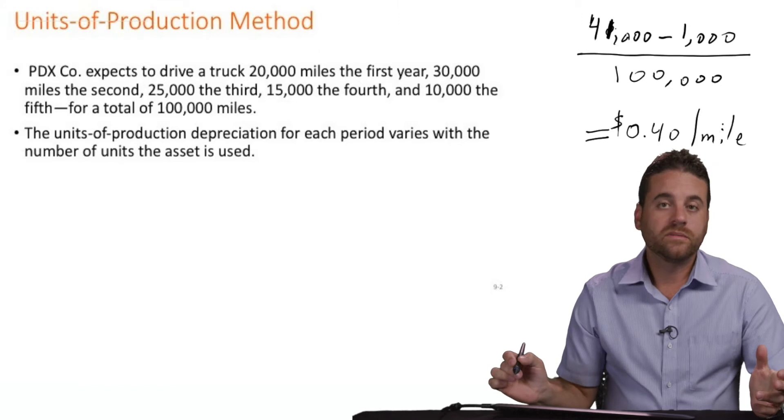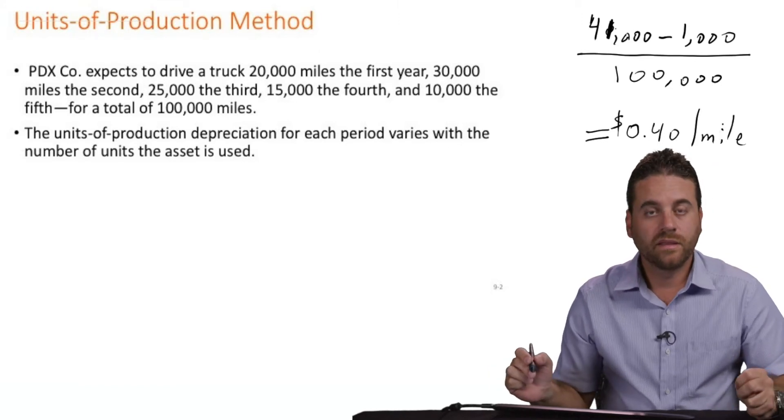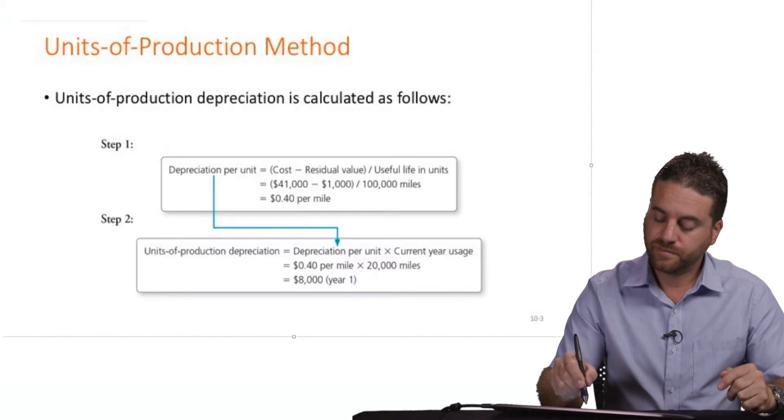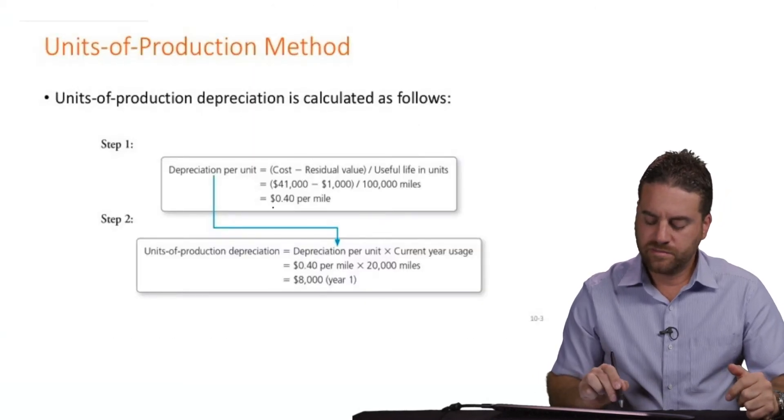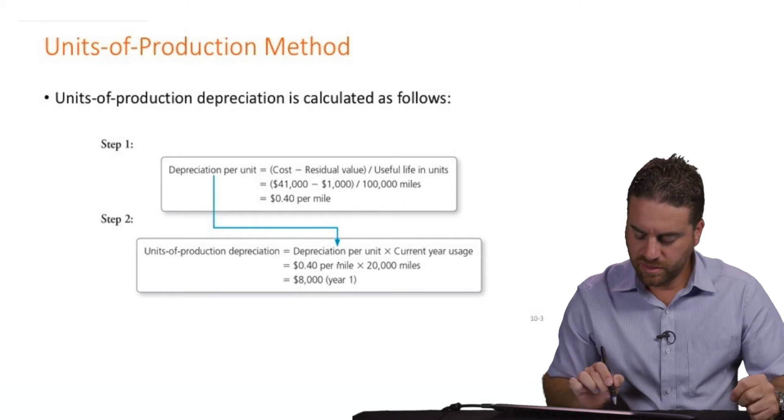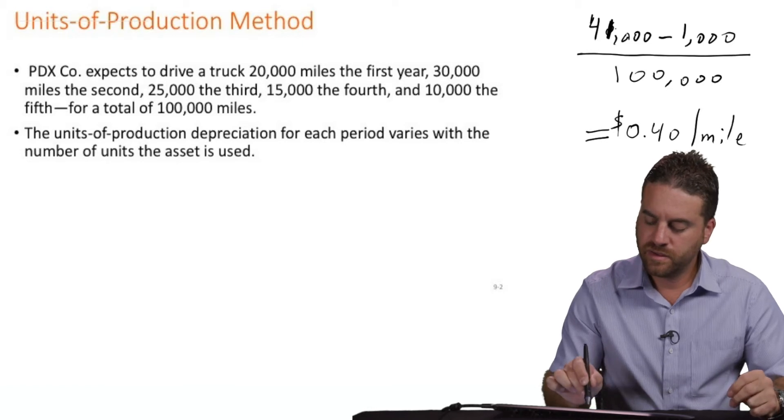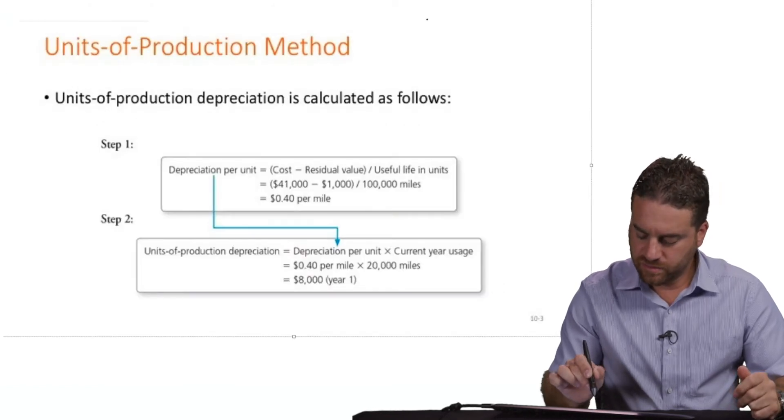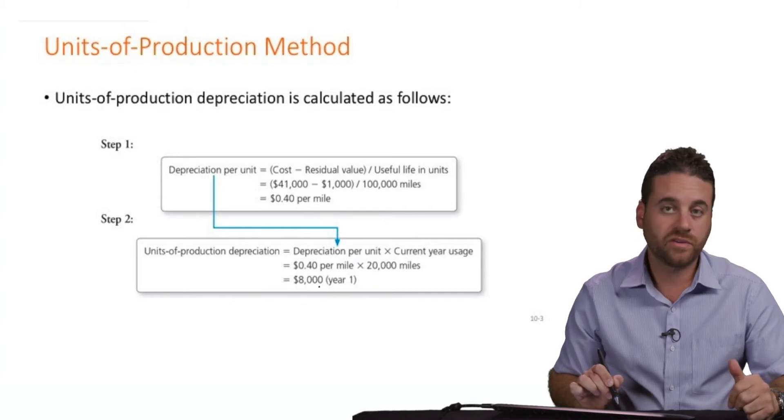So the next step is easy. We just multiply 40 cents by the number of miles. So year one, this is how we calculate the 40 cents. Year one, we used it for 20,000 miles, 20,000 multiplied by 40 cents. That would give me $8,000 the first year.